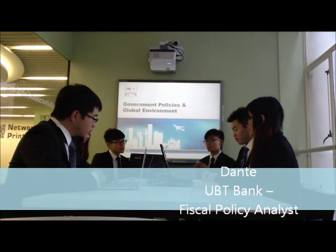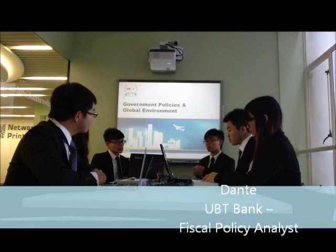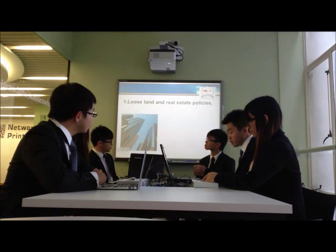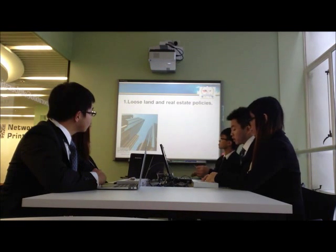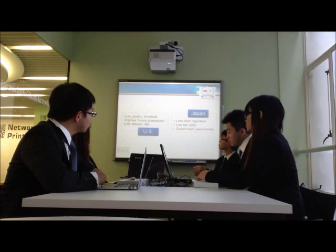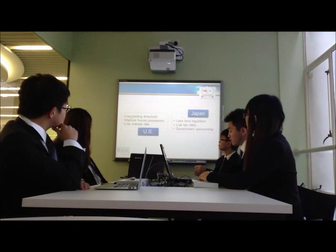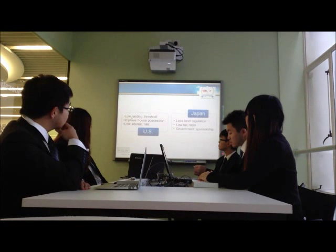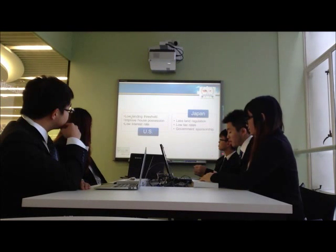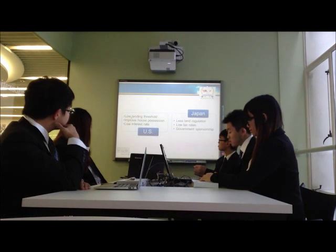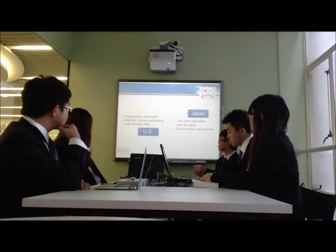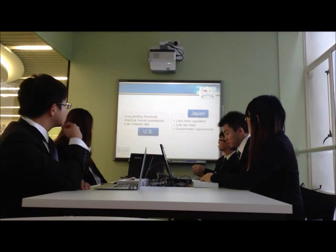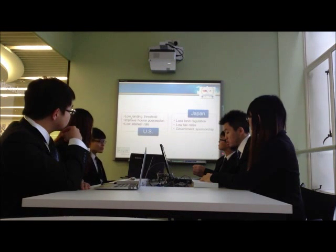Let me introduce the similarities in government policies and the global environment of the two financial crises. First, both Japan and the U.S. governments implemented rather loose land and real estate policies. Around 2006, the U.S. government lowered the threshold of bank lending, aiming to improve house ownership by low-income citizens. Accompanied by low interest rates near zero, subprime lending rose significantly. Similarly in Japan in the 1980s, the government barely had land regulation or any land use policies. Apart from also low interest rates, in the land investment field, the tax risks and incomplete tax laws made the situation worse. In some ways, the government was a direct sponsor behind the surge in land value, as the need to raise domestic demand was urgent but government effort in infrastructure development was little.